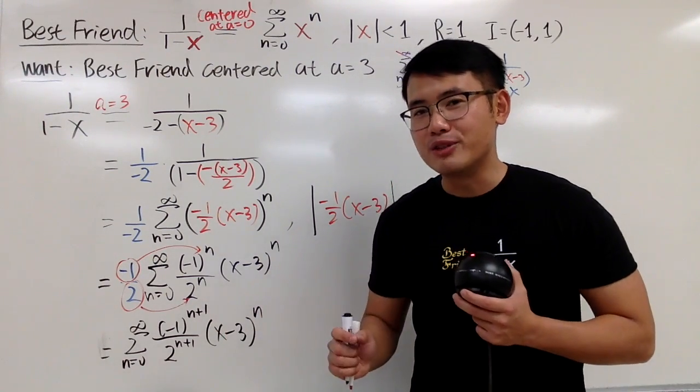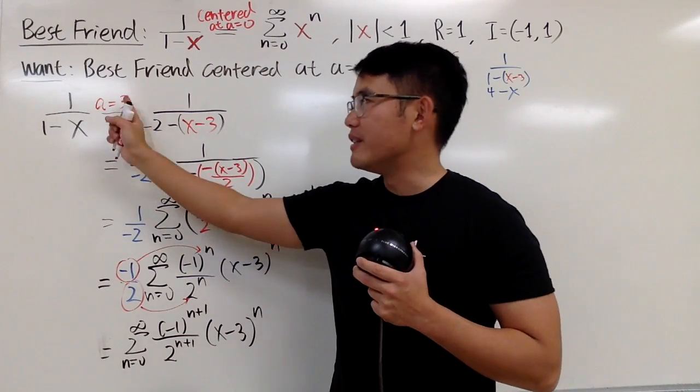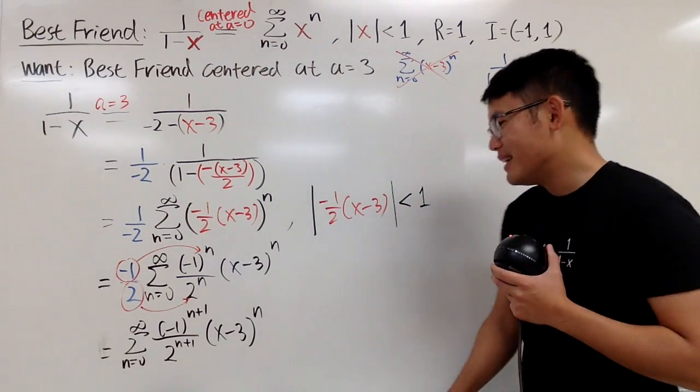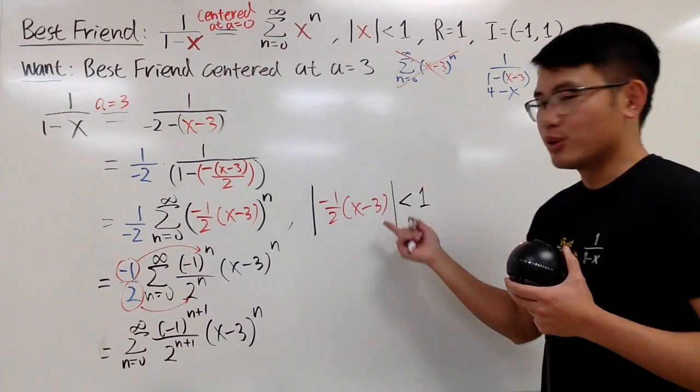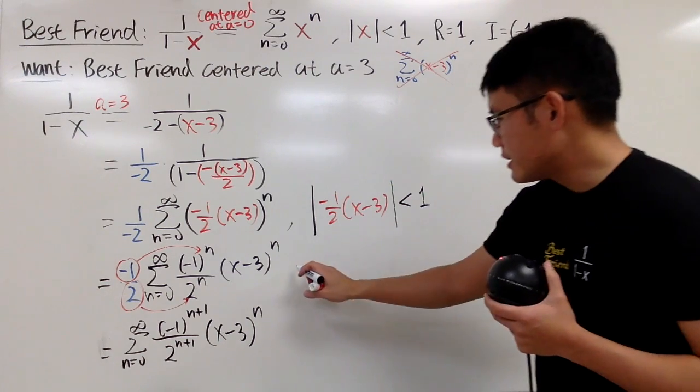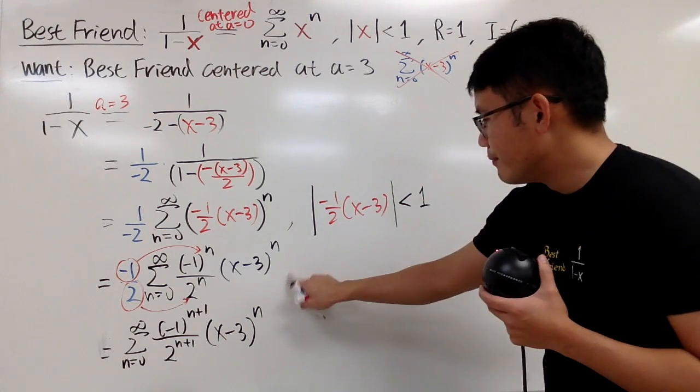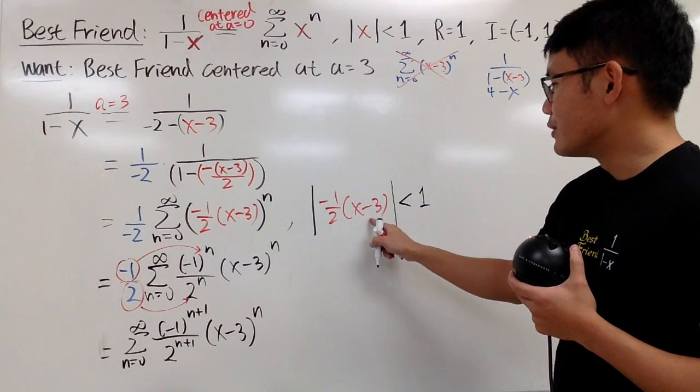So, this right here is the power series expansion for our best friend, the center at 3, right? So, that's what we have, and of course we should also figure this out real quick. So, let's see. Negative in the absolute value doesn't matter, and then we have this. So, in fact, we can just multiply both sides by 2.